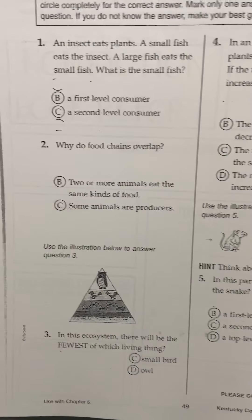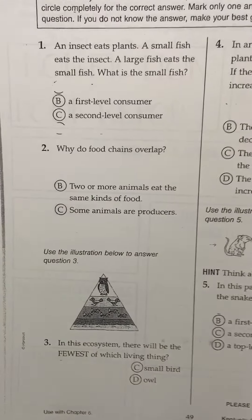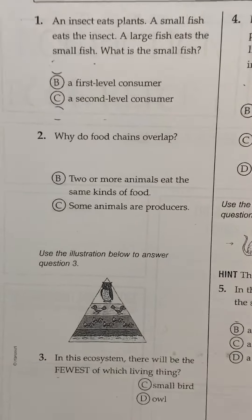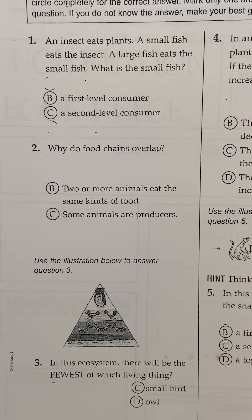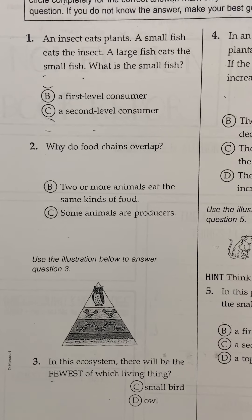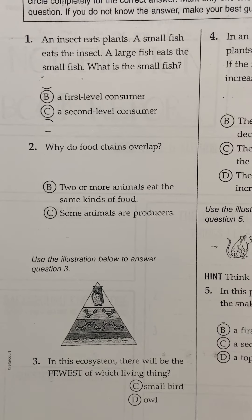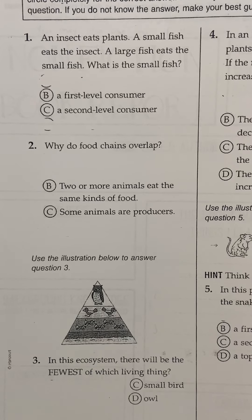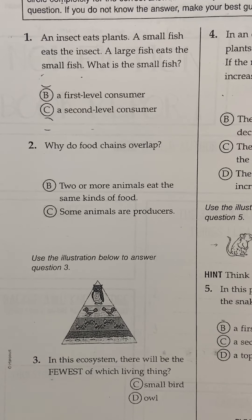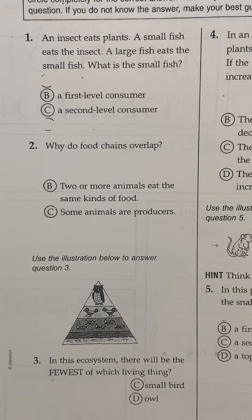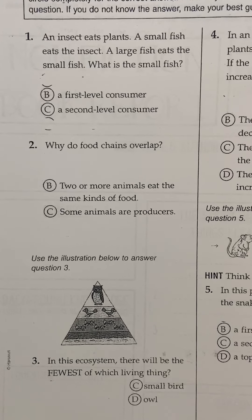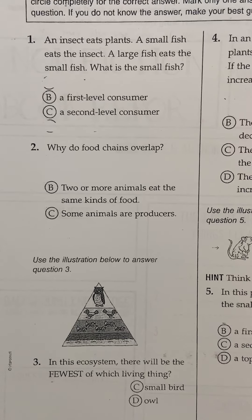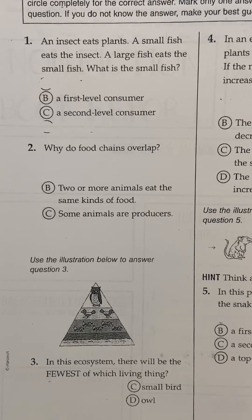And here we have some questions. Question one: an insect eats plants, a small fish eats the insect, a large fish eats the small fish. What is the small fish — a first level consumer or a second level consumer?